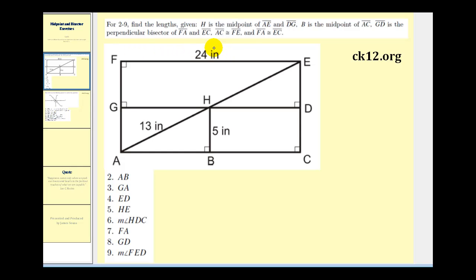Let's go through the given information first. We're told that H is the midpoint of AE and DG. So here's the segment AE. If H is the midpoint, then segment AH is equal to the length of HE.